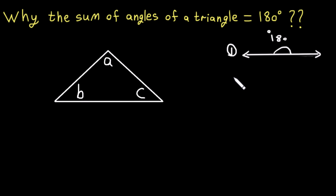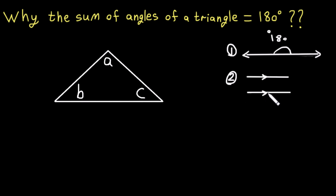The second knowledge we will use is that alternate interior angles are equal. For example, if we have two parallel lines and a transversal line cutting them, the alternate interior angles are equal. These two angles form a Z shape.